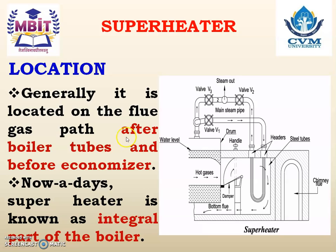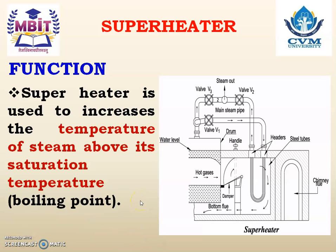Location: Generally, superheater is located on the flue gas path after the boiler tube and before the economizer. Nowadays, superheater is known as the integral part of a boiler. Function: The superheater is used to increase the temperature of steam above its saturation temperature, that is above its boiling point, and to convert the steam into superheated steam.